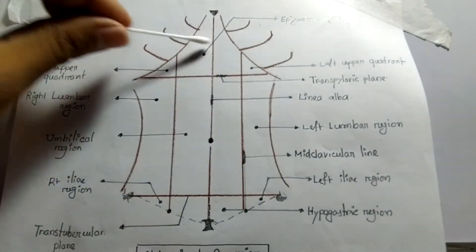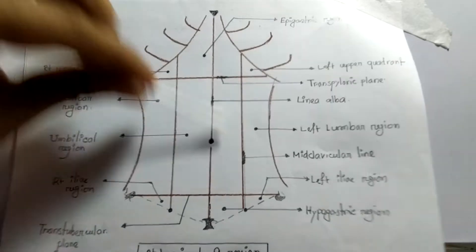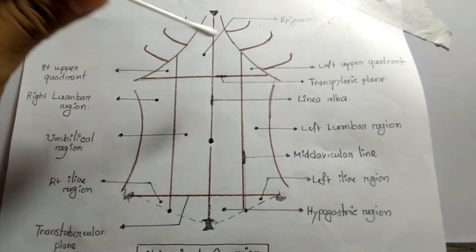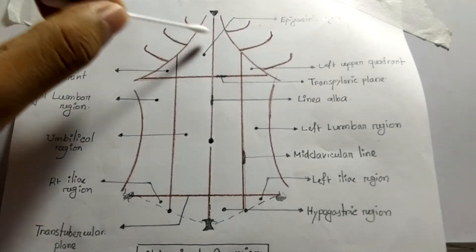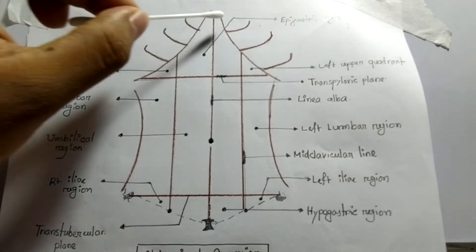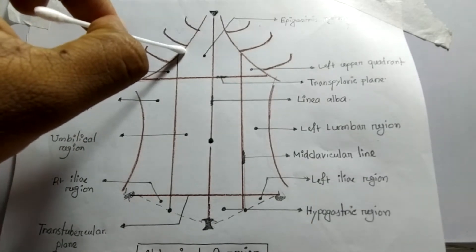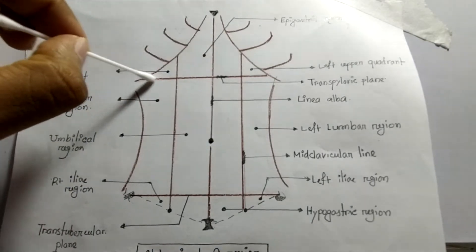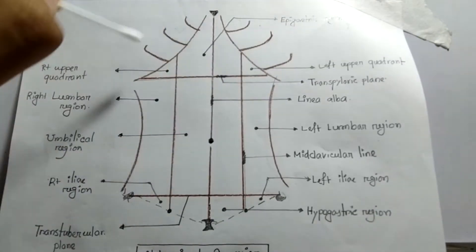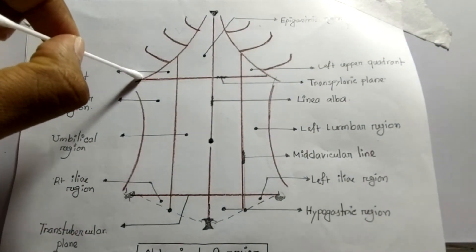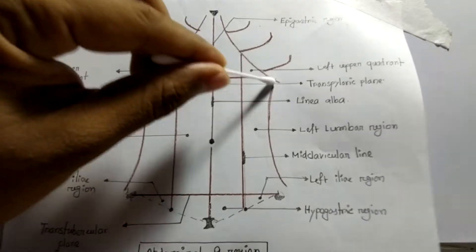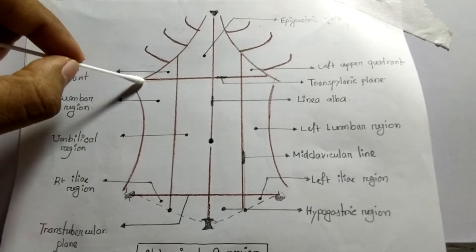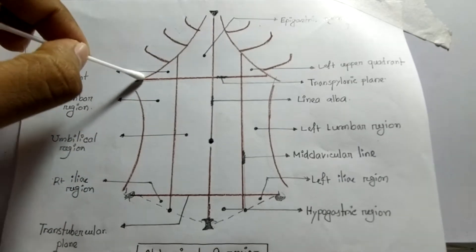There are several lines that divide the abdomen into nine regions. This is the costal plane — this is the right costal plane, this is the left costal plane. There are two horizontal lines situated here. This is the tip of the ninth costal cartilage on each side, at the costal margin, and by this process there is a horizontal plane.